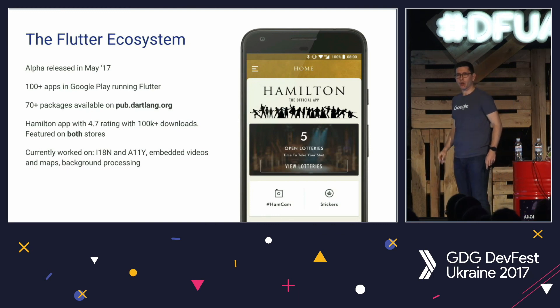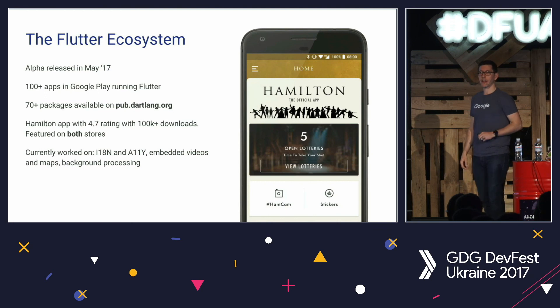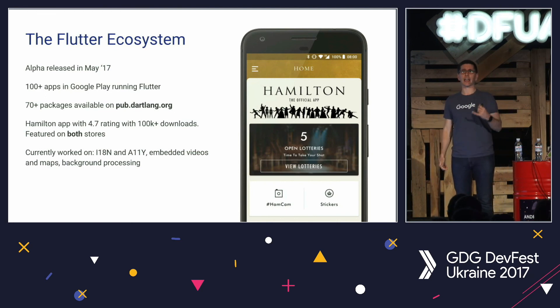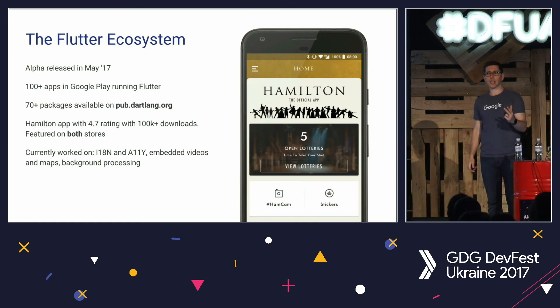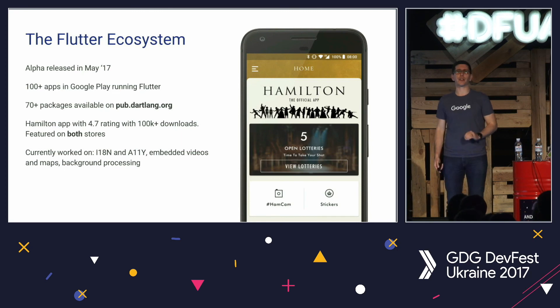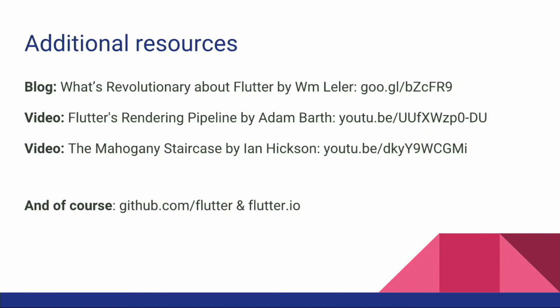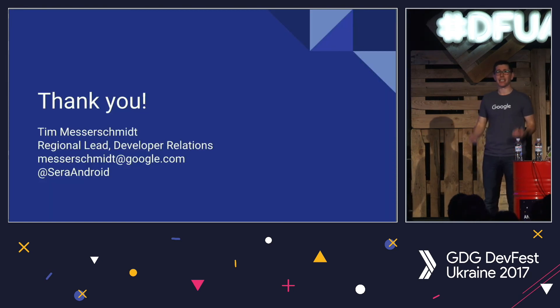There are more than 100 apps already running in the Google Play Store using Flutter. We have an amazing ecosystem that you can find on the Dart package directory, pub. Certain things are missing because Flutter is currently in alpha, and as we work towards beta, you will see things like proper internationalization support, accessibility, background processing, dealing with maps, dealing with videos, and a few other things. If you're trying to decide if you should use Flutter right now, look at the features Flutter already supports — they are all very high quality. Resources: flutter.io, github.com/flutter. Check out those videos and amazing blog posts. Please grab me if you want to talk about it.